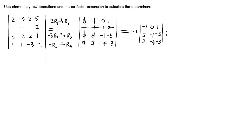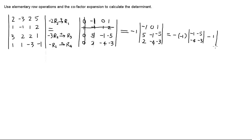Now we expand along the first row. We already have a negative sign. Expanding gives us negative one, and now we have a 2×2 determinant: negative one, negative five, negative four, and negative three. Then the cofactor signs are negative, positive, negative, positive. So we have another negative sign and one times the remaining entries: five, negative one, two, and negative four. So we have these two cofactors.